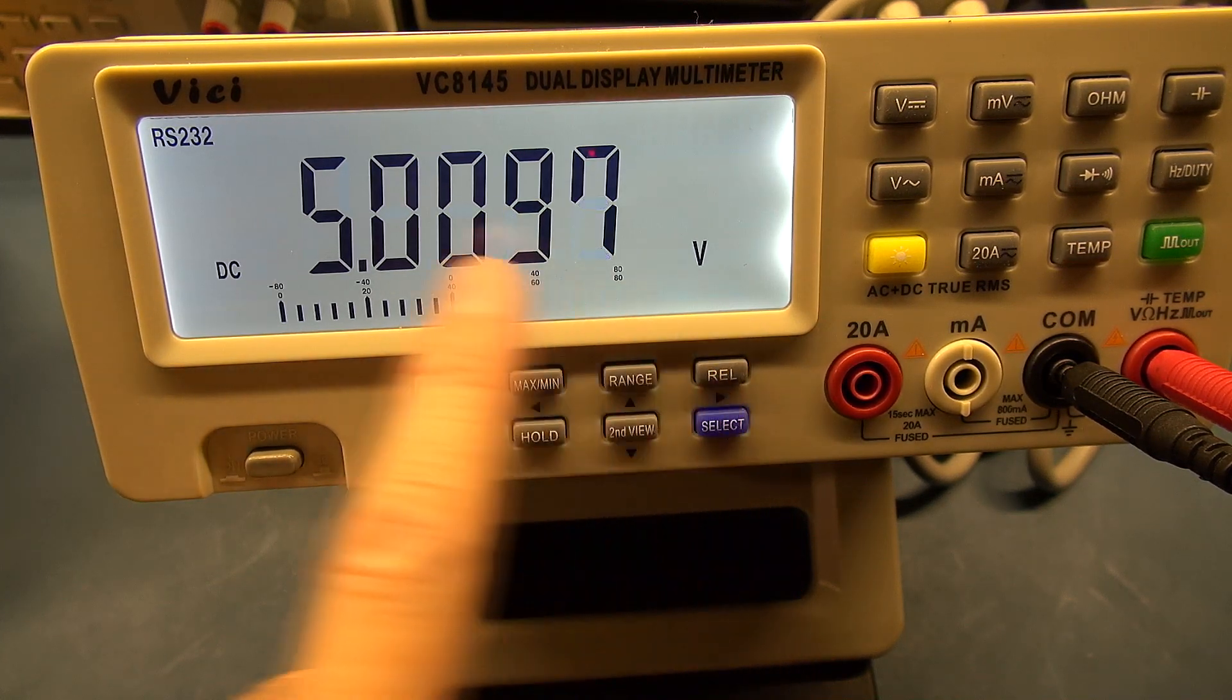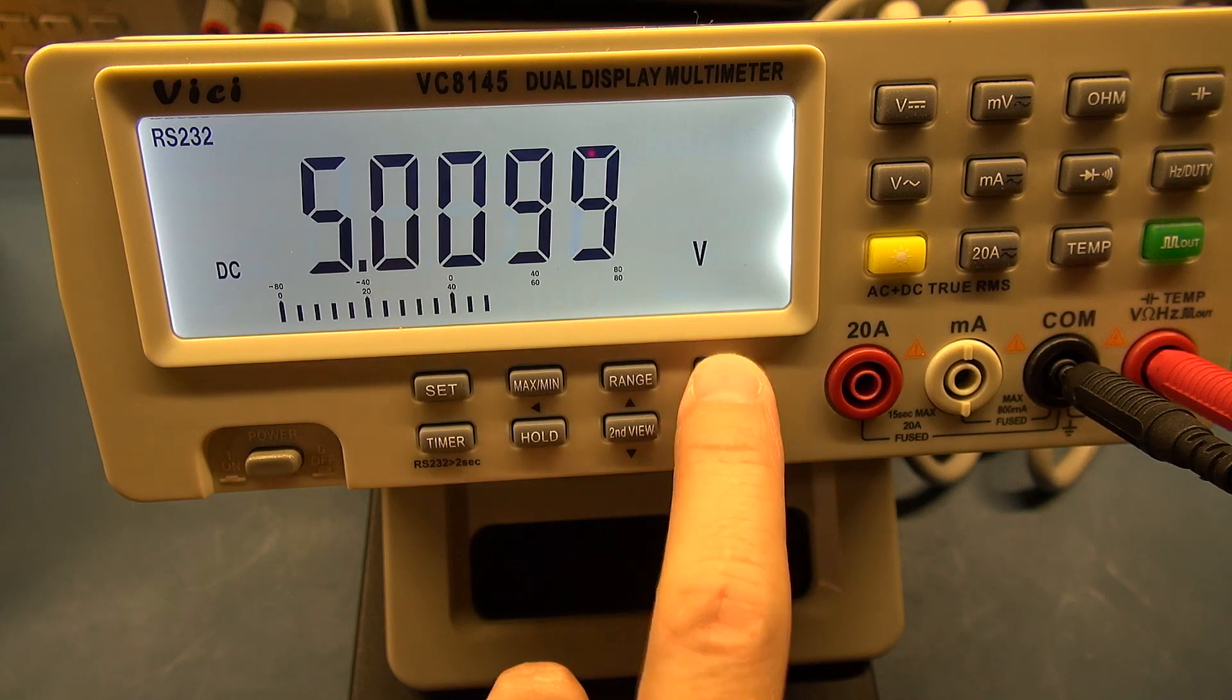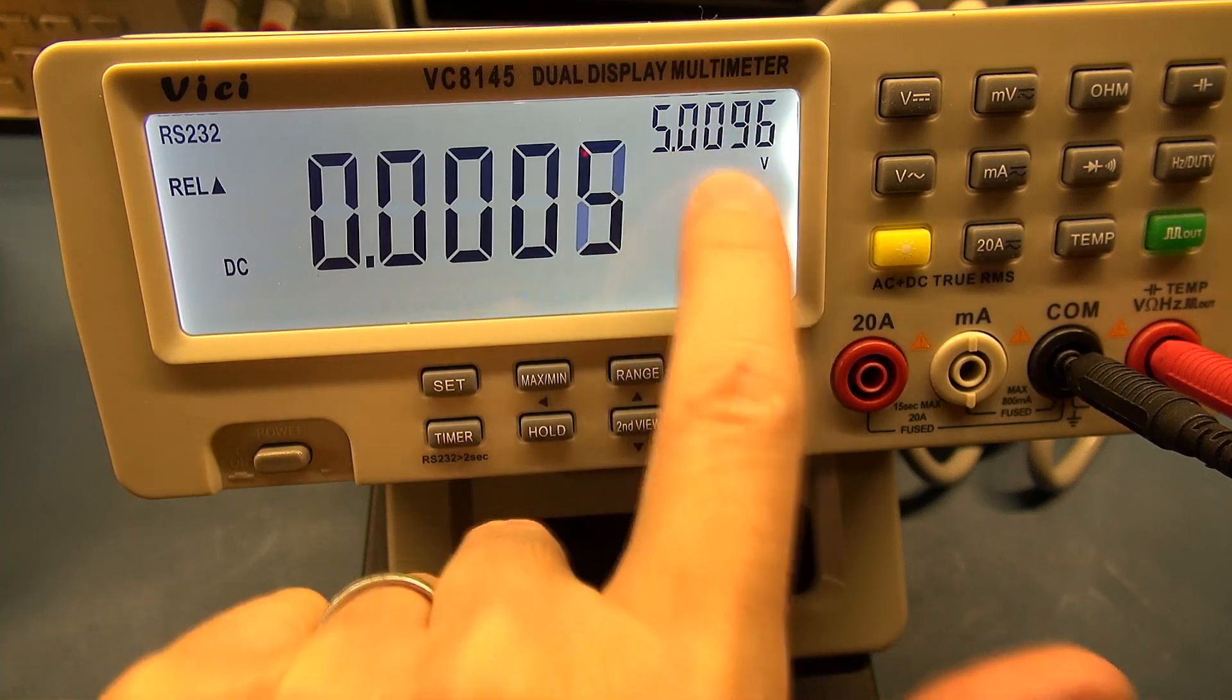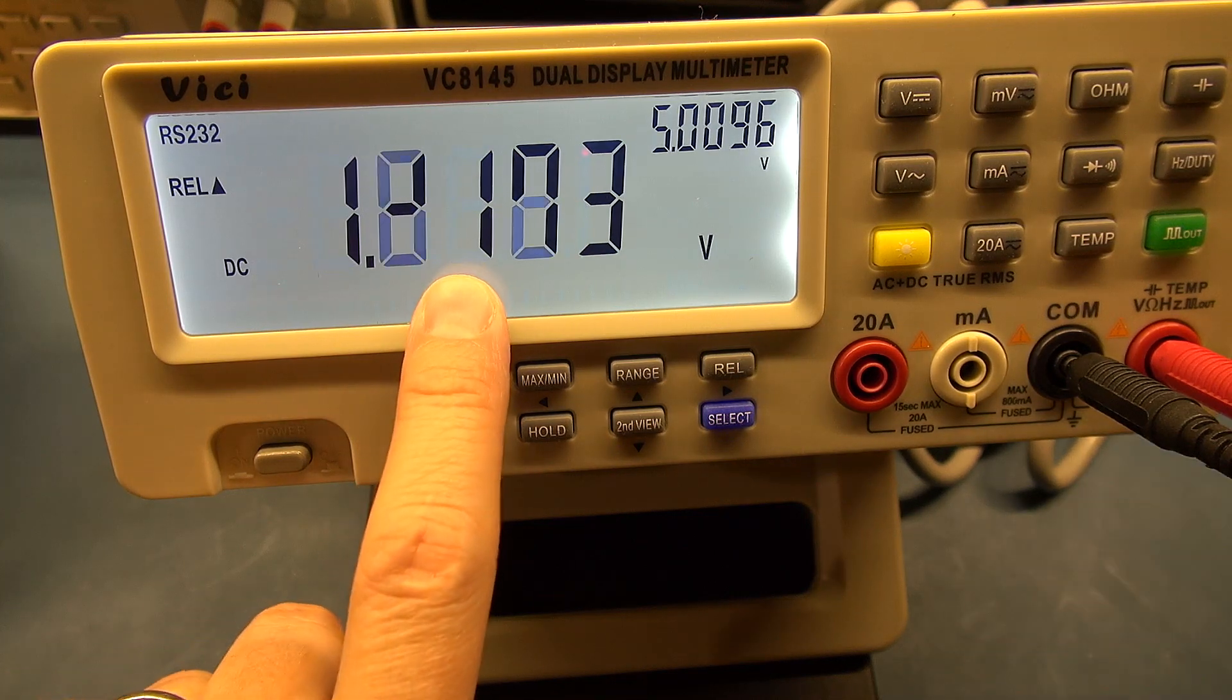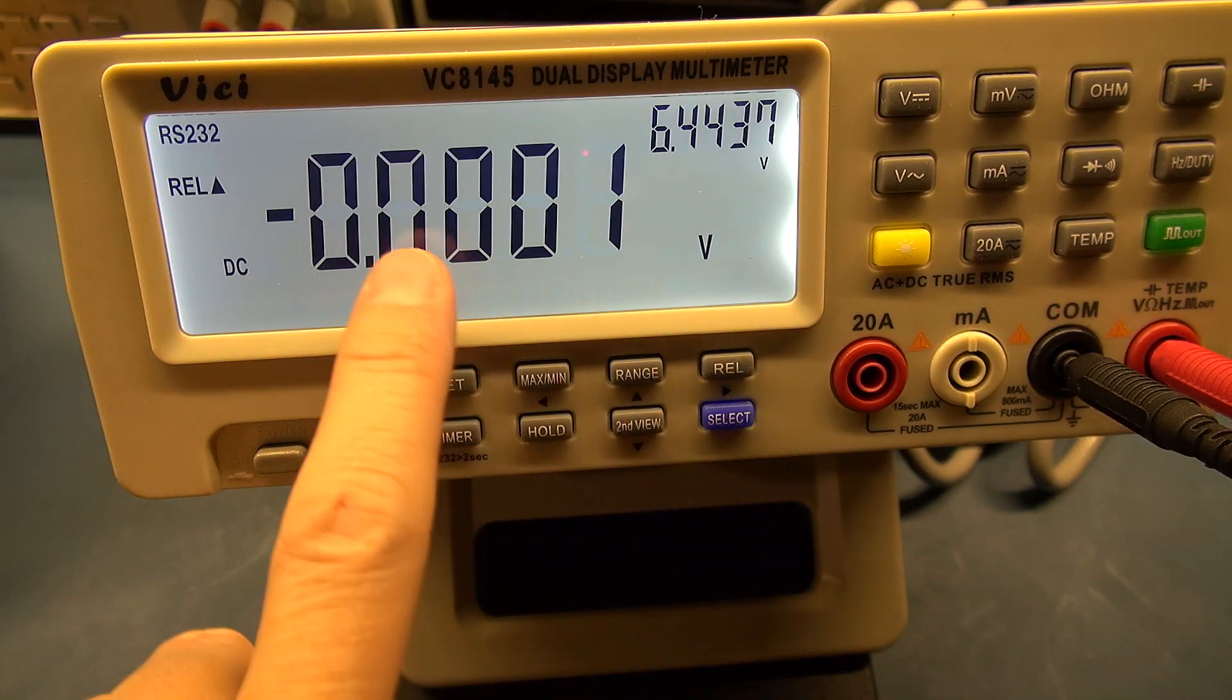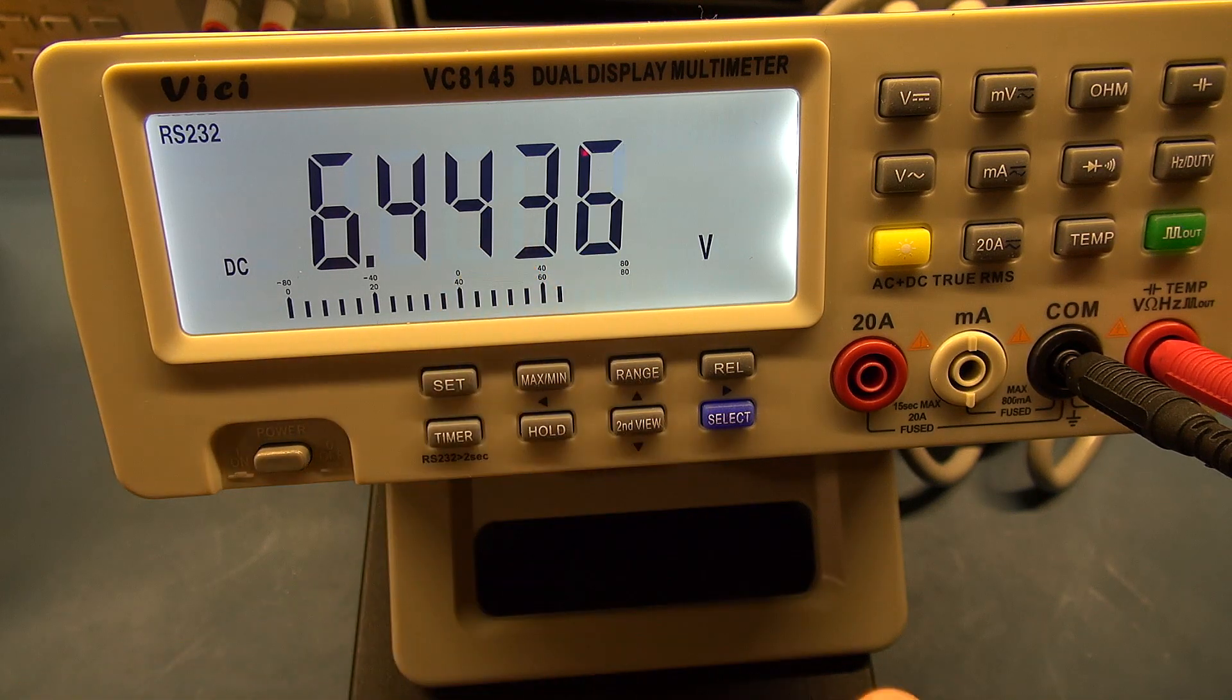You've then got your relative function, which as I said if you want a relative function to the reading where you are, in other words you want to null out or zero your display, you push rel. You get zero here, and you get your reading that you're relative from in your second display over here. If you happen to have a change in the reading like I'm doing now, so I've got a change relative to what I was at. If I push the rel button again, it will simply then take the new value and relative out. If I hold down the rel button, it's going to cancel that function.